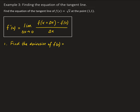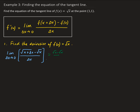We'll find the derivative of square root of x using the limit definition. So we're going to have the limit of square root of x plus delta x minus square root of x, all divided by delta x, as delta x approaches 0. If we do a direct substitution and plug in delta x equal to 0, we get root x minus root x divided by delta x, which gives us 0 over 0 — an indeterminate result.